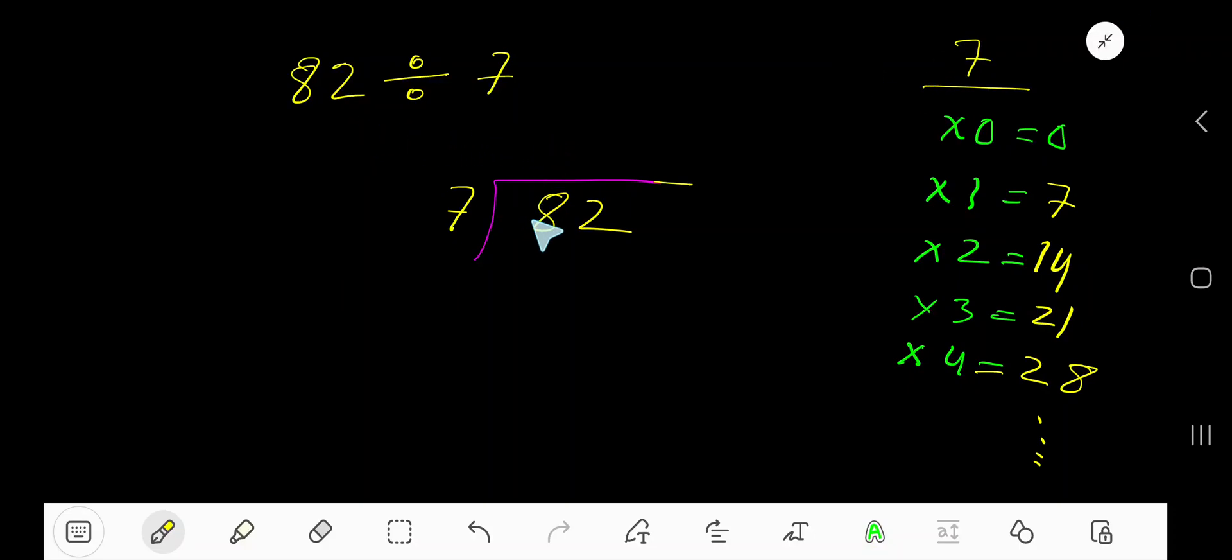82 divided by 7. Here 7 is a divisor, so we need the multiplication table of 7. 7 times 0 is 0, 7 times 1 is 7, 7 times 2 is 14, 7 times 3 is 21, 7 times 4 is 28.